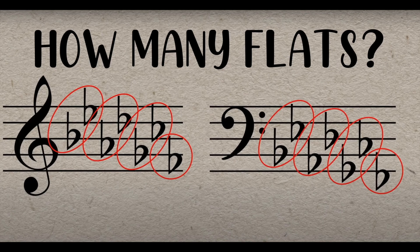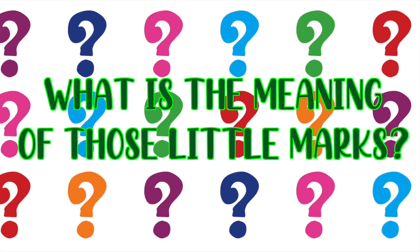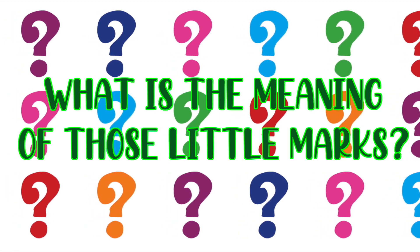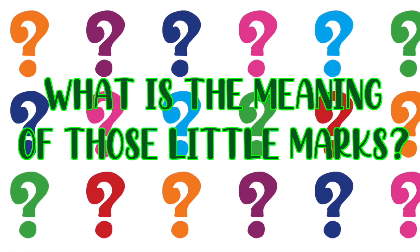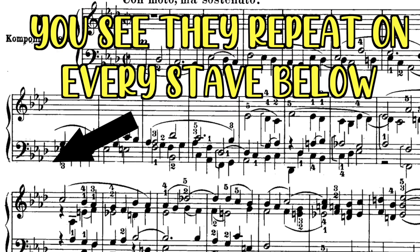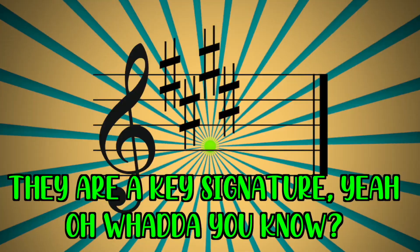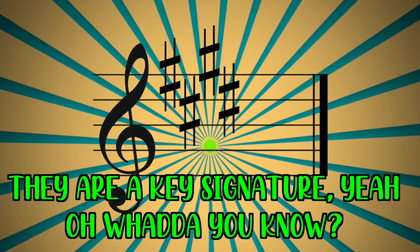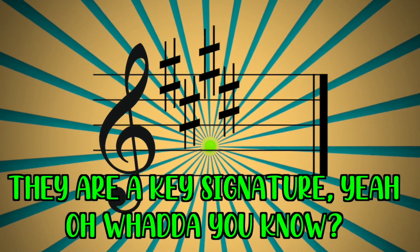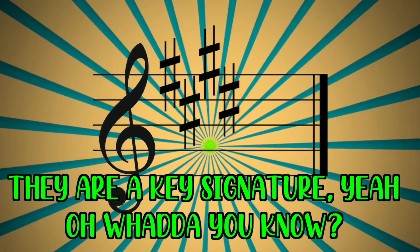How many flats? Oh, how many sharps? What is the meaning of those yellow marks? You see, they repeat on every stave below. They are a key signature, yeah. Oh, what do you know?